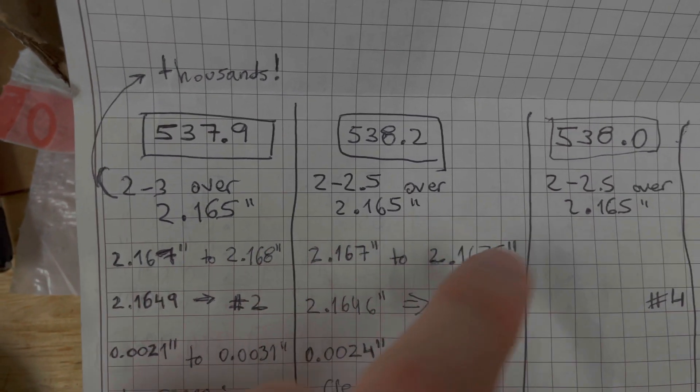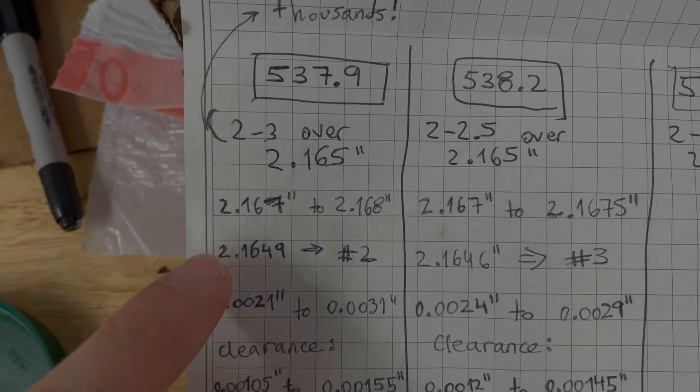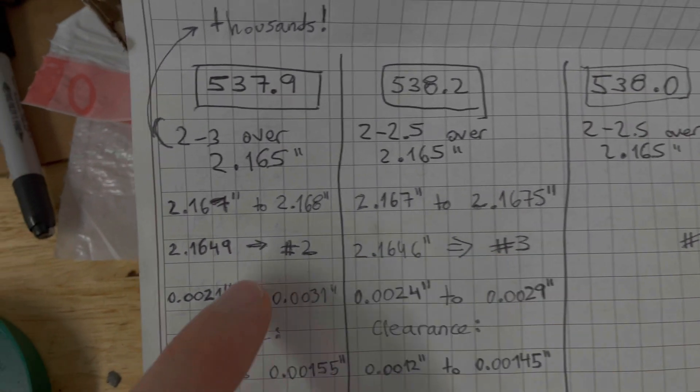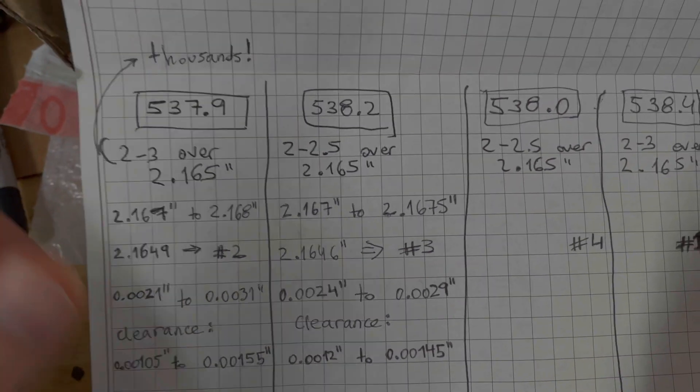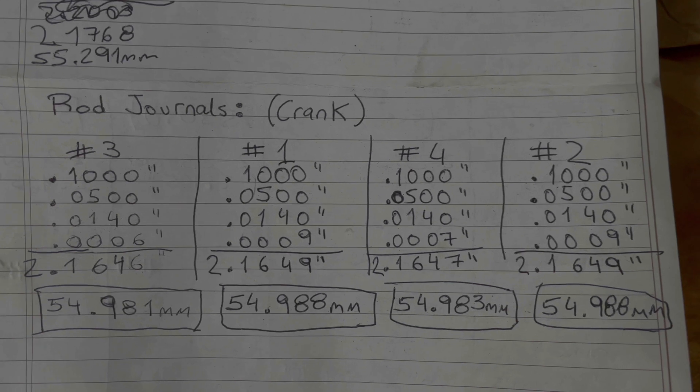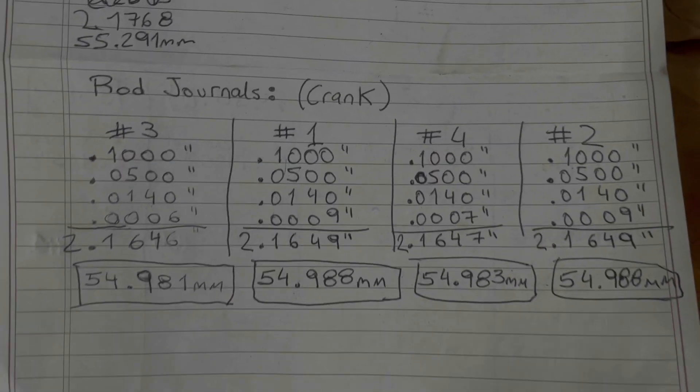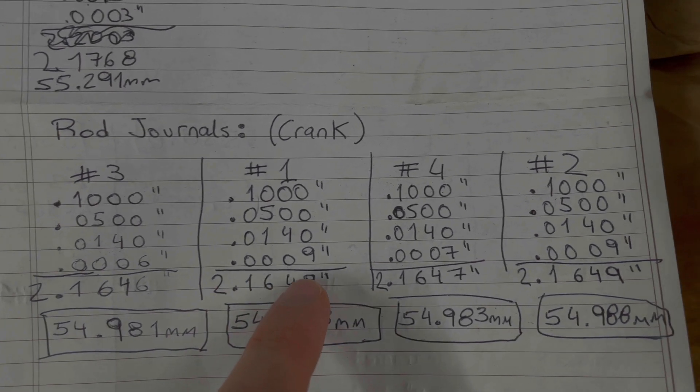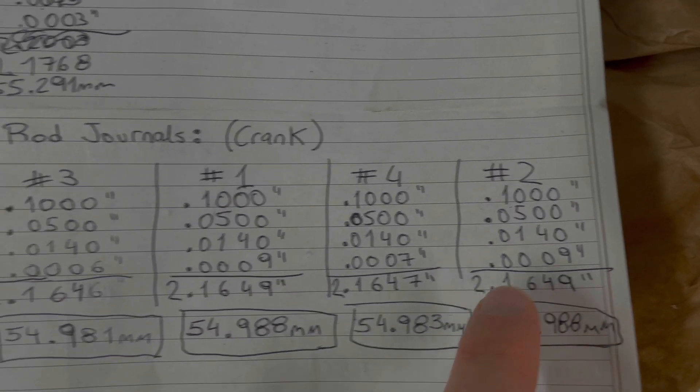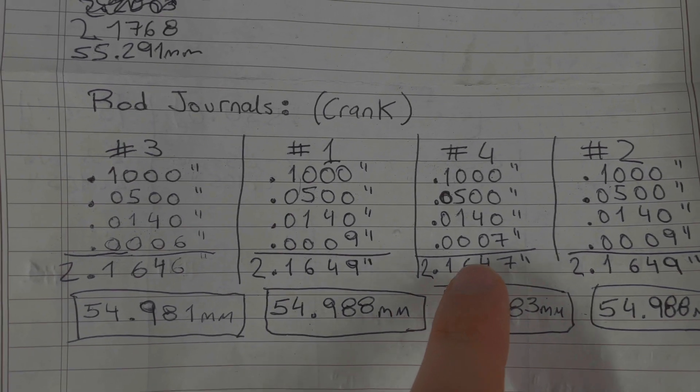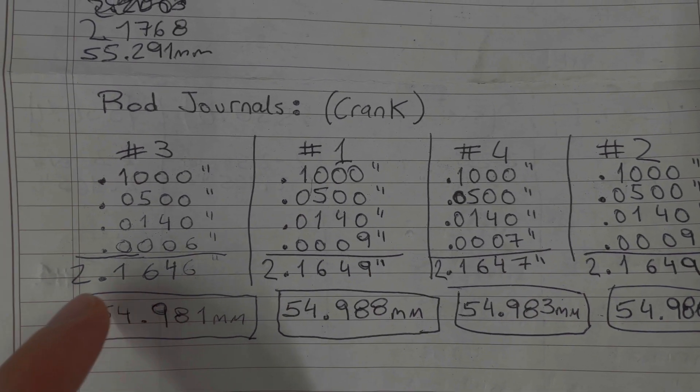Then I selected which rod journal I wanted to assign it to, because two of my journals were a little bigger and two were a little smaller. You can see number one is 2.1649 inches, and so is number two. Then number three and number four are very slightly smaller.